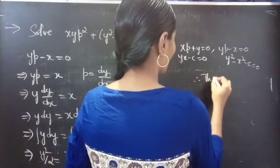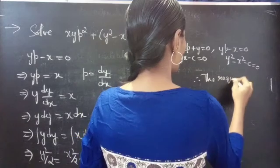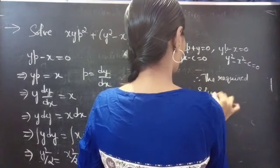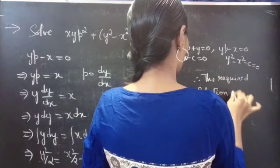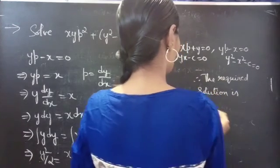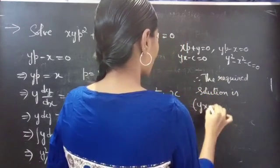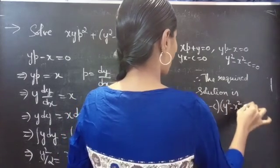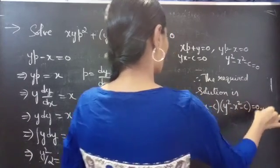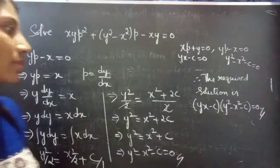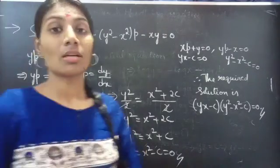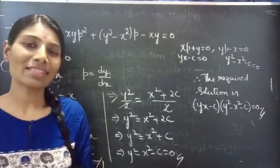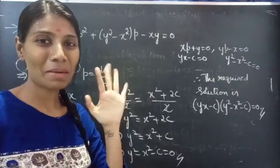Therefore the required solution is (x·y - c)·(y² - x² - c) = 0. We have seen our problem on solvable for P in this video. Hope you all understood. We will see you in the next video — until then, bye bye.